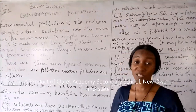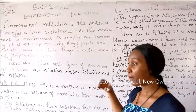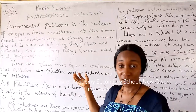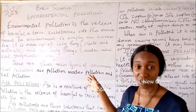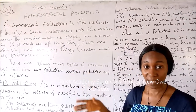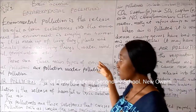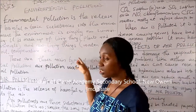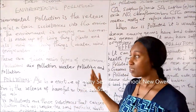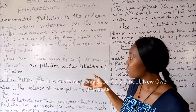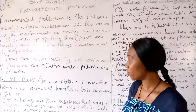The environment is made up of two parts. We have the biotic, which are the living parts of the environment, like plants and animals. Then we have the abiotic, or the non-living, which includes temperature, light, air, humidity, soil, and so on and so forth.